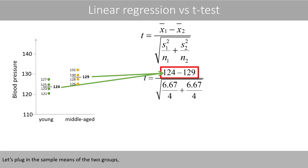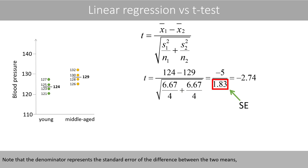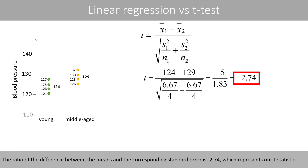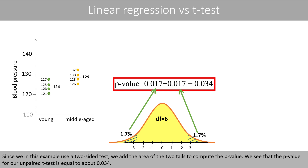Let's plug in the sample means of the two groups, the sample variances, and the sample size of each group. Note that the denominator represents the standard error of the difference between the two means, whereas the numerator shows the difference between the two means. The ratio of the difference between the means and the corresponding standard error is negative 2.74, which represents our t-statistic. We then use statistical software to compute the area to the left-hand side of negative 2.74 and to the right-hand side of positive 2.74 in the t-distribution with six degrees of freedom. Since we use a two-sided test, we add the area of the two tails to compute the p-value, which is equal to about 0.034.